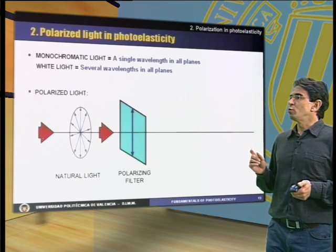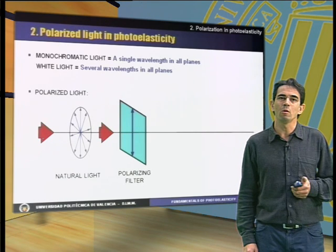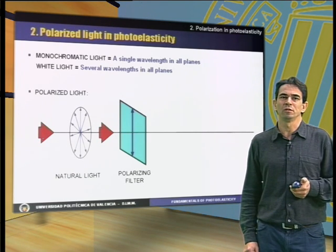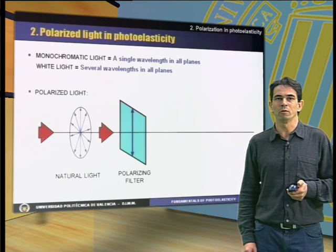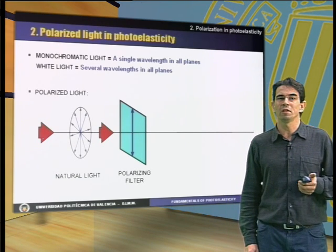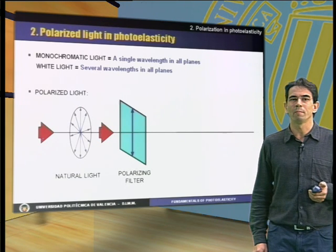If the ray of light goes through a polarizing filter, the filter only allows the pass of light waves that occur in the polarization direction. The rest of directions are gradually extinguished. In fact, waves in the perpendicular direction are totally extinguished. This filter is called a polarizing filter.